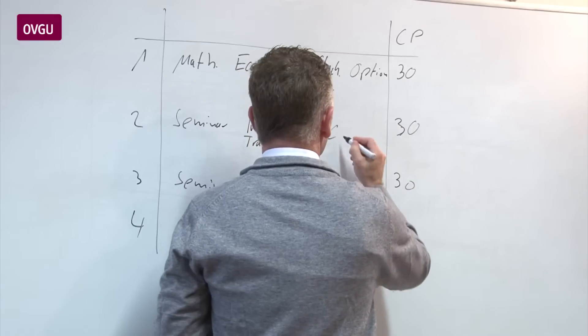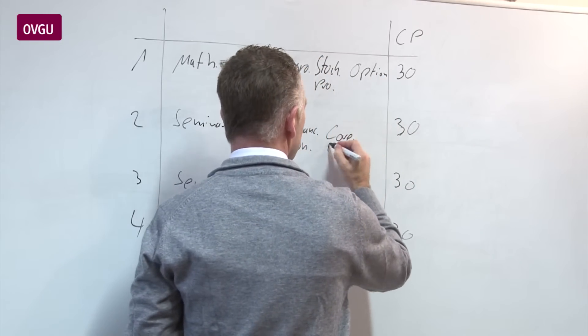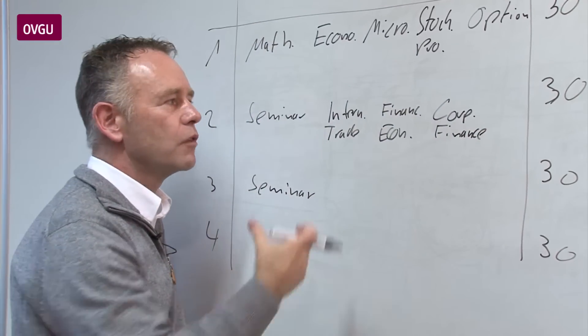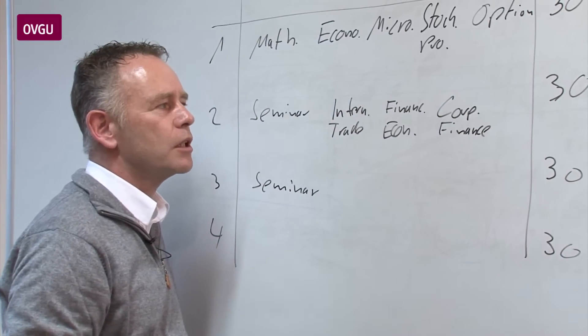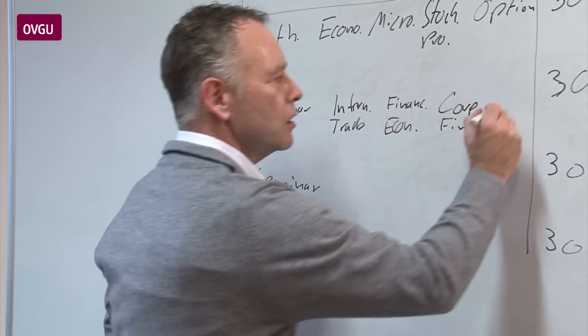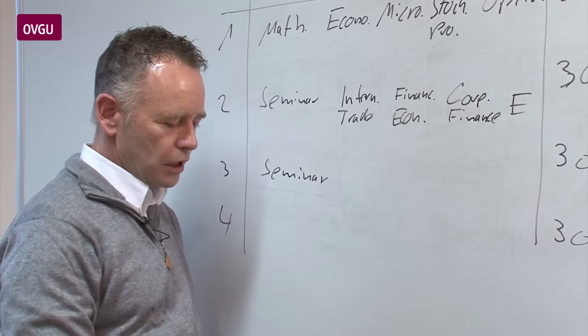And then the second lecture in finance, in core finance, is corporate finance. In corporate finance we talk about valuation of the company, we talk about cost of equity, cost of debt and so on. And here additionally you can choose something what is called an elective course.